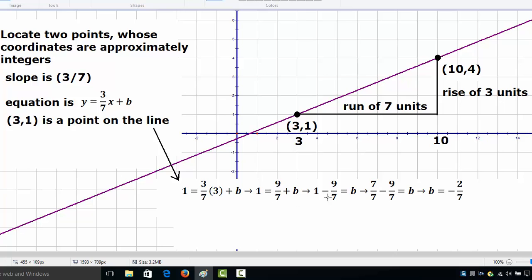Now we can transfer 9 over 7 to the other side, it will become negative 9 over 7. Take the common denominator as 7, we have 7 minus 9 equals b, which means b is negative 2 over 7.